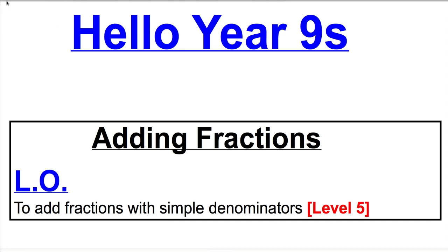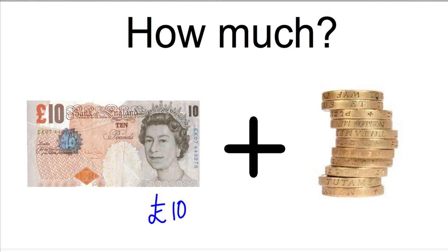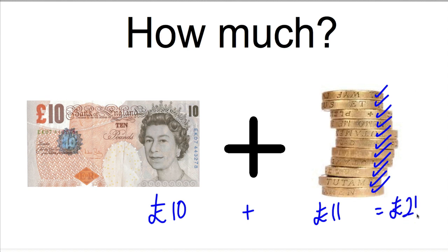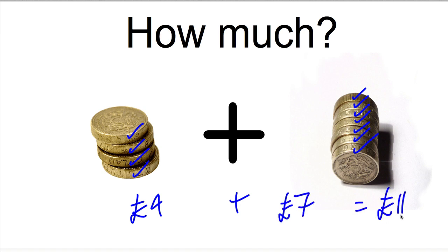To introduce this topic I'm going to talk about money. If I showed you this picture and asked you how much — take a second to think. This note here represents 10 pounds, and there are 1, 2, 3, 4, 5, 6, 7, 8, 9, 10, 11 one-pound coins. So 10 pounds plus 11 pounds must equal 21 pounds.